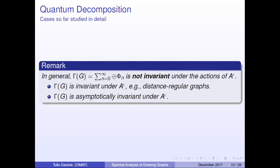In general, the Hilbert space is not invariant under the action of the quantum components, but we have special cases — for example, distance-regular graphs — where the Hilbert space is asymptotically invariant under the action of the quantum components.